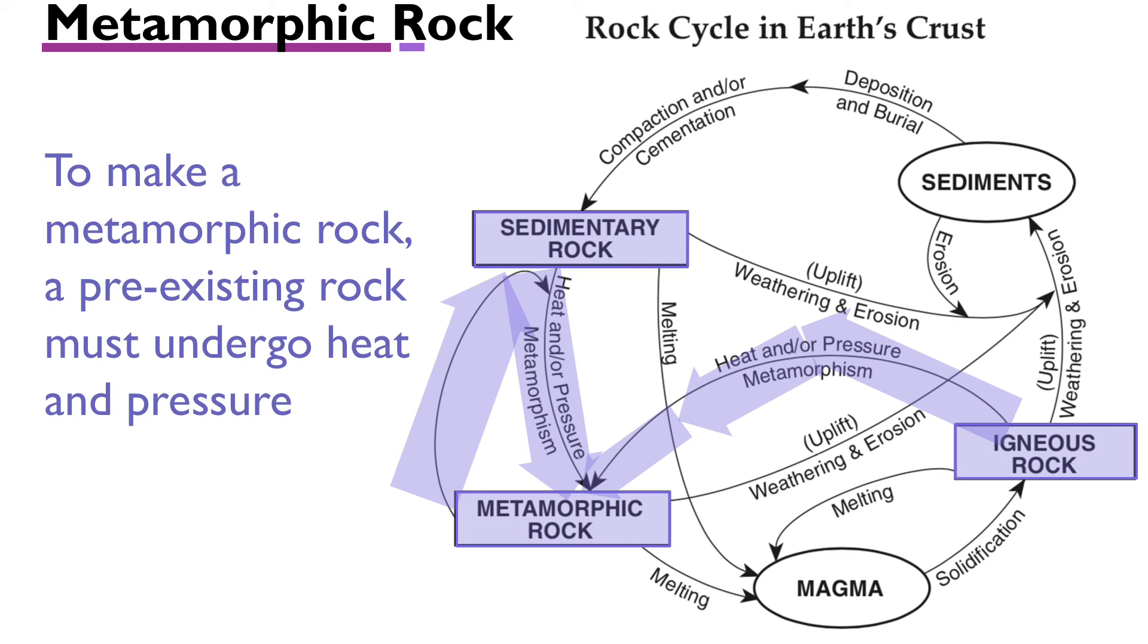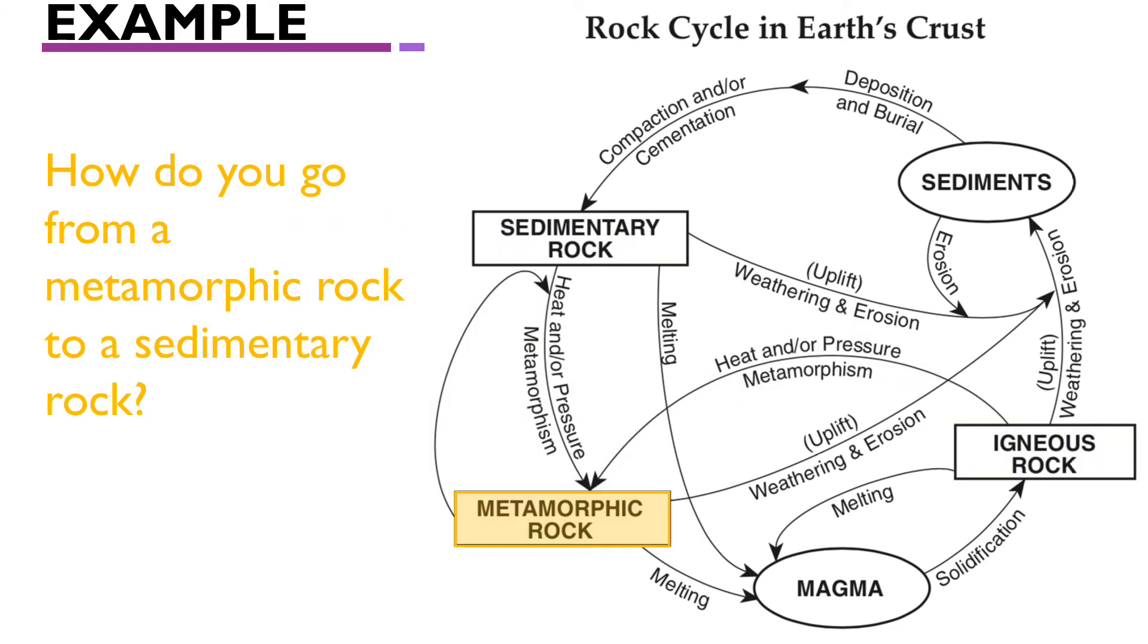To summarize: to make a metamorphic rock, you can have any pre-existing rock—igneous, sedimentary, or even another metamorphic rock—put under heat and pressure, and you get a new metamorphic rock. I'm going to end today by showing you an example of how to go from a metamorphic rock to a sedimentary rock.